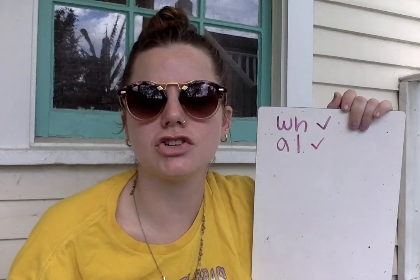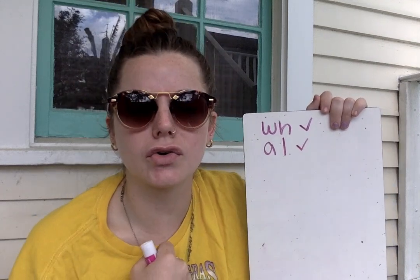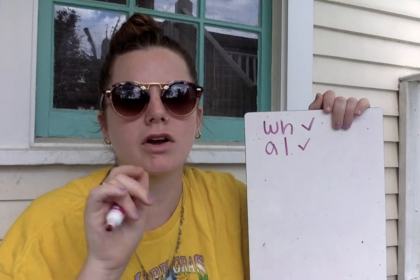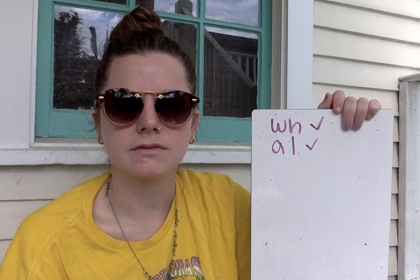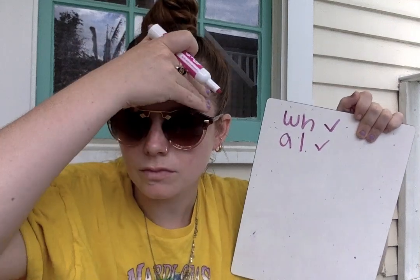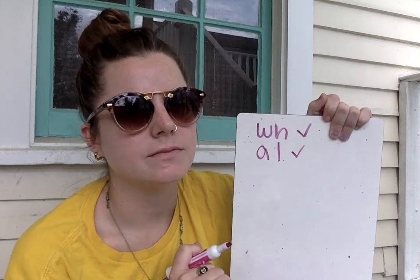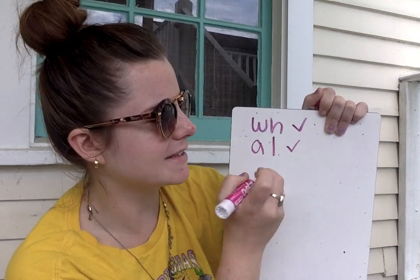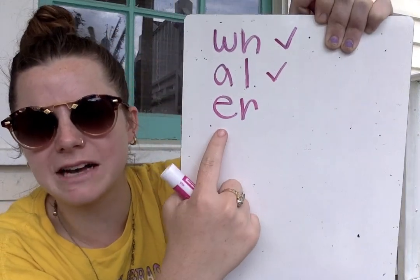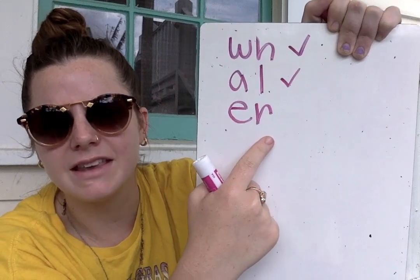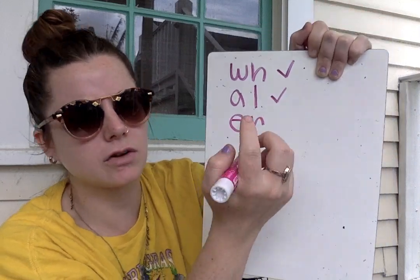The next sound combination you're going to write is the sound combination er. What sound combination? Yes, er. Write the sound combination er. Go. Eyes on me. As I write the digraph, you say the sound. I'm going to write the sound er — get ready — er. E-R. How do you spell the sound combination er? Yes, E-R. And what sound does it make? Yes, er. Check or change your work.